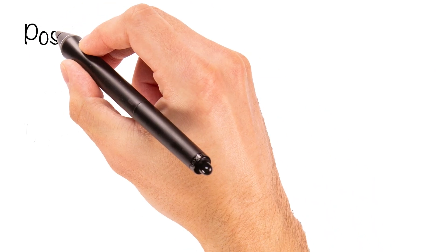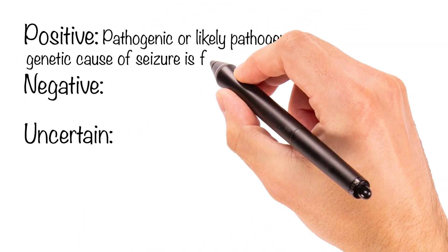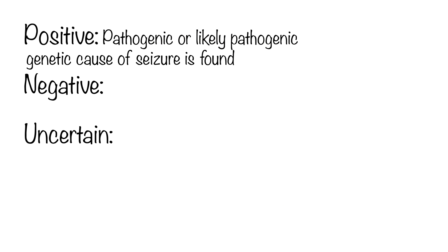There are three possible results that your child may receive: positive, negative, or uncertain. A positive result, also called pathogenic or likely pathogenic, means that the test found a genetic variant that may be the cause of your child's epilepsy.